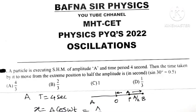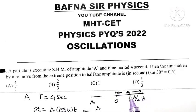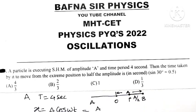X is equal to A by 2 because particle is moving from extreme position and it reaches to point P which is at a distance of A by 2.